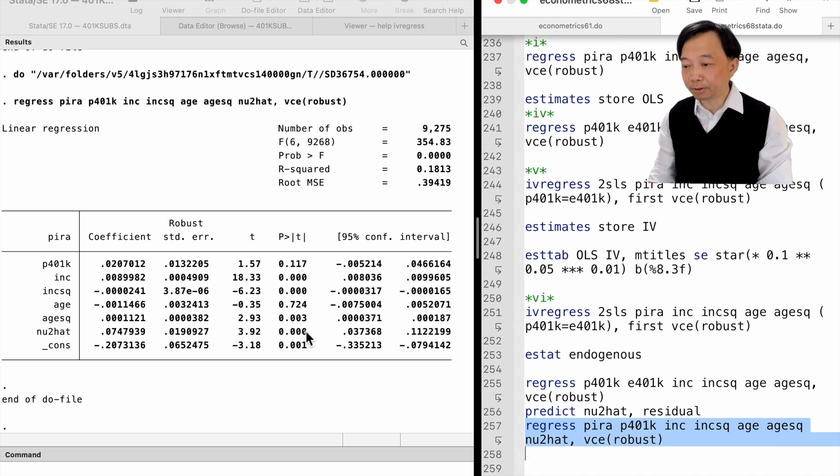We find that nu 2 hat is statistically different from zero. We reject the null hypothesis and conclude that P401k is indeed endogenous.